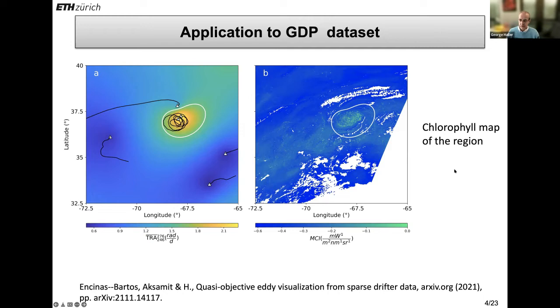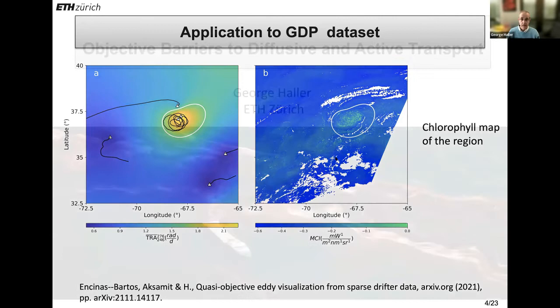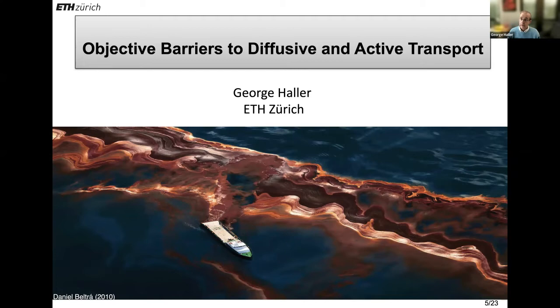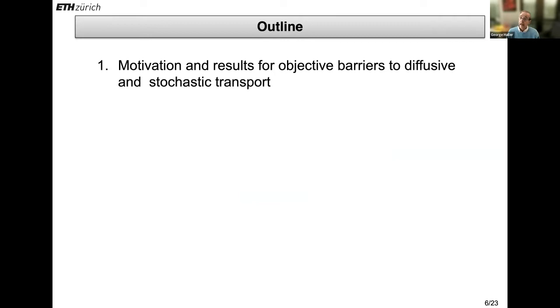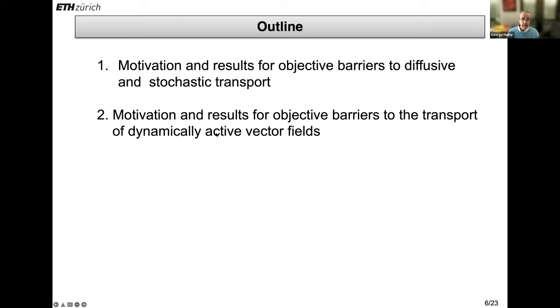So this is what I left out yesterday. You can find more details in these papers. And I want to move on to today's topic, which is objective barriers to diffusive and active transport. That will also have a motivation first for diffusive and stochastic transport. The two turn out to be very related.